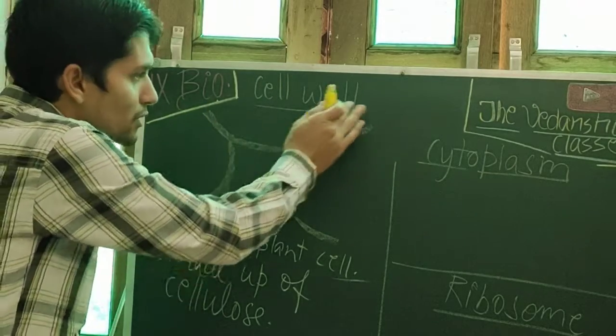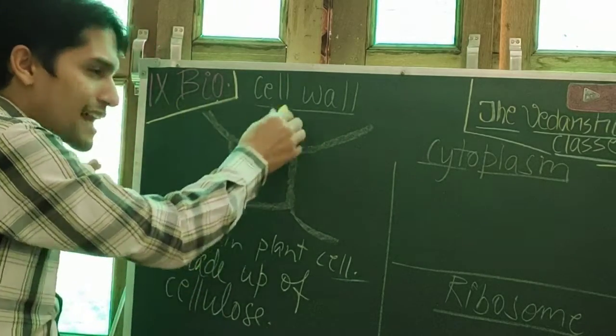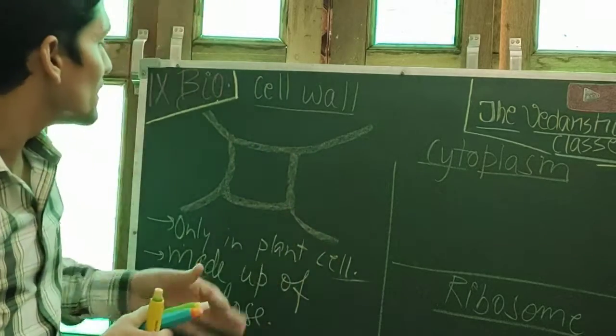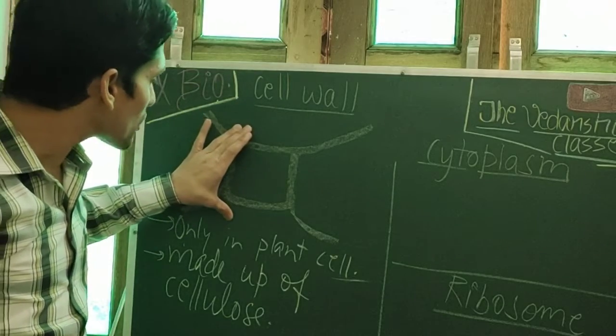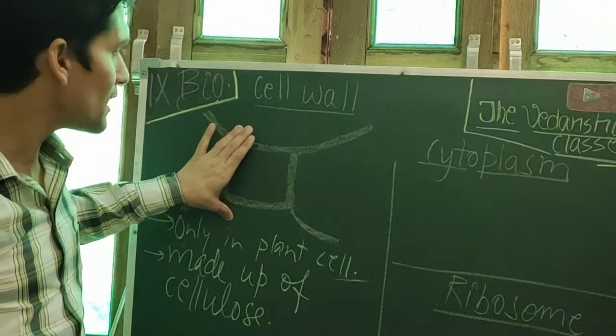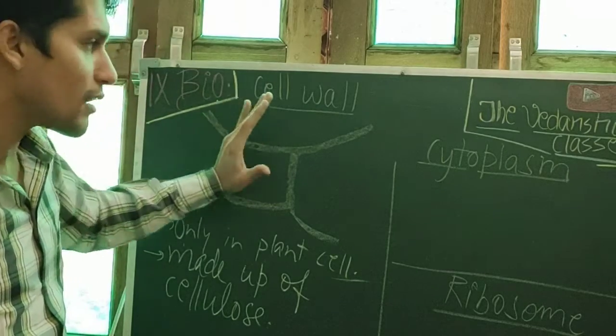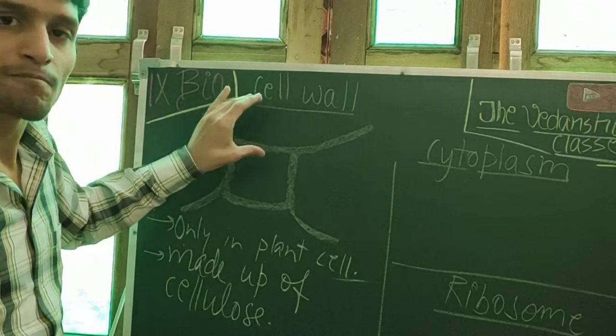Cell wall is the hard part and the outer covering. Cell wall is the outer covering of the plant cell. Cell wall is the outermost layer of the plant cell. It is found only in the plant cell. It is also the characteristic feature of the plant cell.